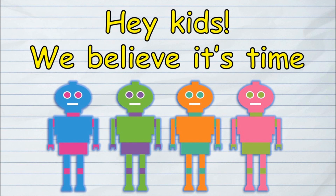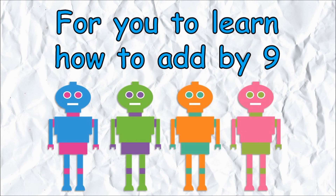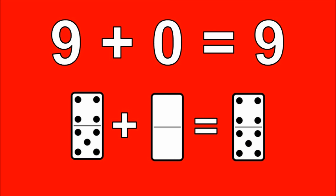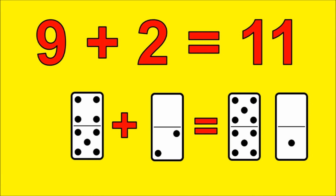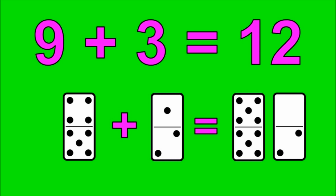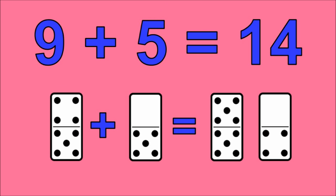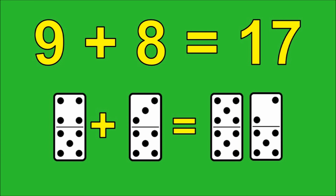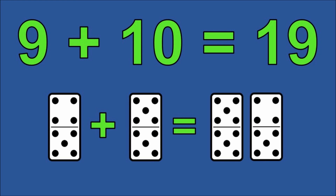Hey kids, we believe it's time for you to learn how to add by nine. Are you ready? Yes! Adding starts now. Nine plus zero is nine. Nine plus one is ten. Nine plus two is eleven. Nine plus three is twelve. Nine plus four is thirteen. Nine plus five is fourteen. Nine plus six is fifteen. Nine plus seven is sixteen. Nine plus eight is seventeen. Nine plus nine is eighteen. Nine plus ten is nineteen.